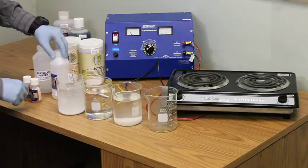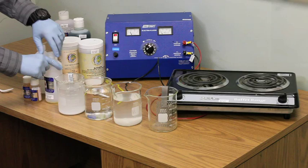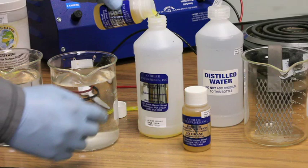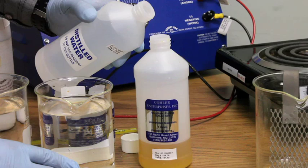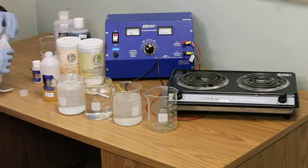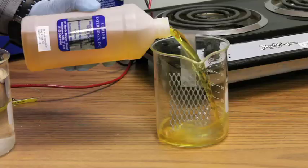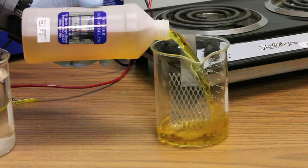Now mix the actual Rhodium solution by pouring the two containers of Rhodium into an empty bottle and fill the rest of the bottle with distilled water. Pour this solution into a 600 milliliter beaker with the platinized titanium anode. You will also need two 600 milliliter beakers of just distilled water.